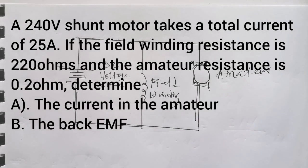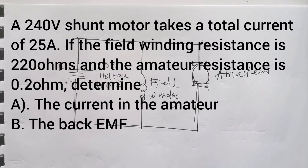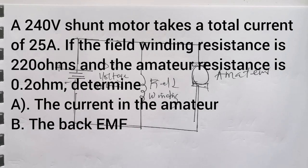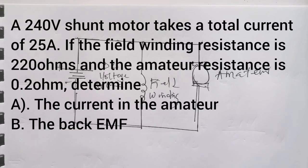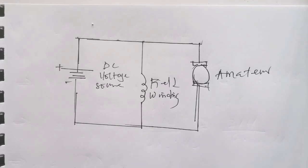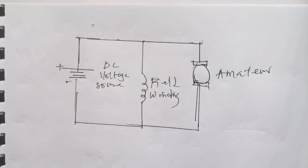Hello viewers and welcome to Engineers Mindset Academy. In this video we are going to be looking at the DC shunt motor using this particular question. The question says: a 240 volt shunt motor takes a total current of 25 amps. If the field winding resistance is 220 ohms and the armature resistance is 0.2 ohms, determine: (a) the current in the armature, (b) the back EMF.